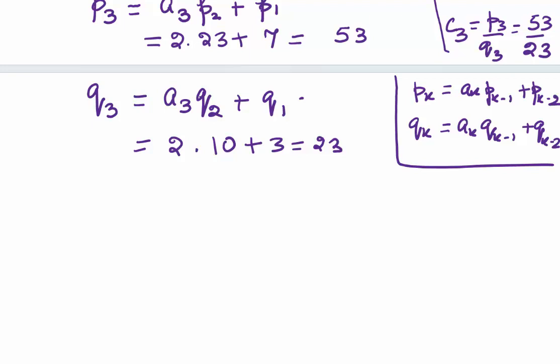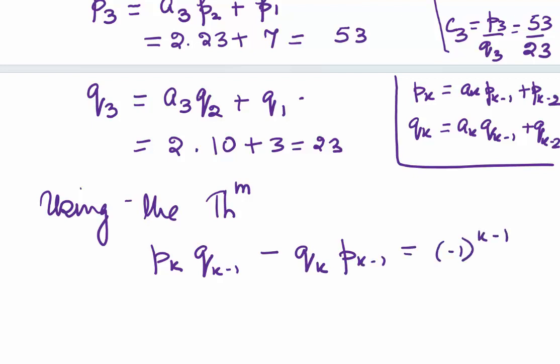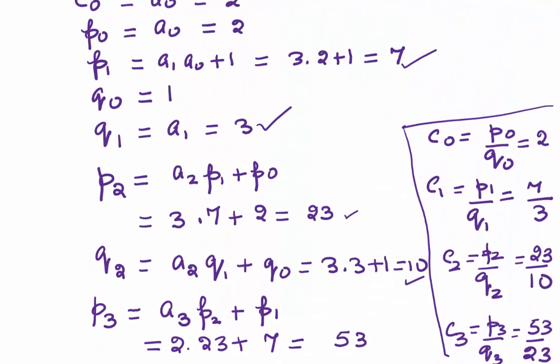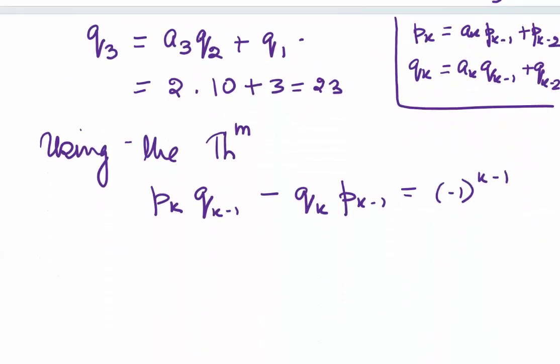The second theorem which we had used says: Pk·Q(k-1) - Qk·P(k-1) = (-1)^(k-1). As we need to substitute the k value, that is why we had mentioned k = 3. What will we do? This is nothing but k = 3. So we have P3·Q2 - Q3·P2 = (-1)^(3-1).